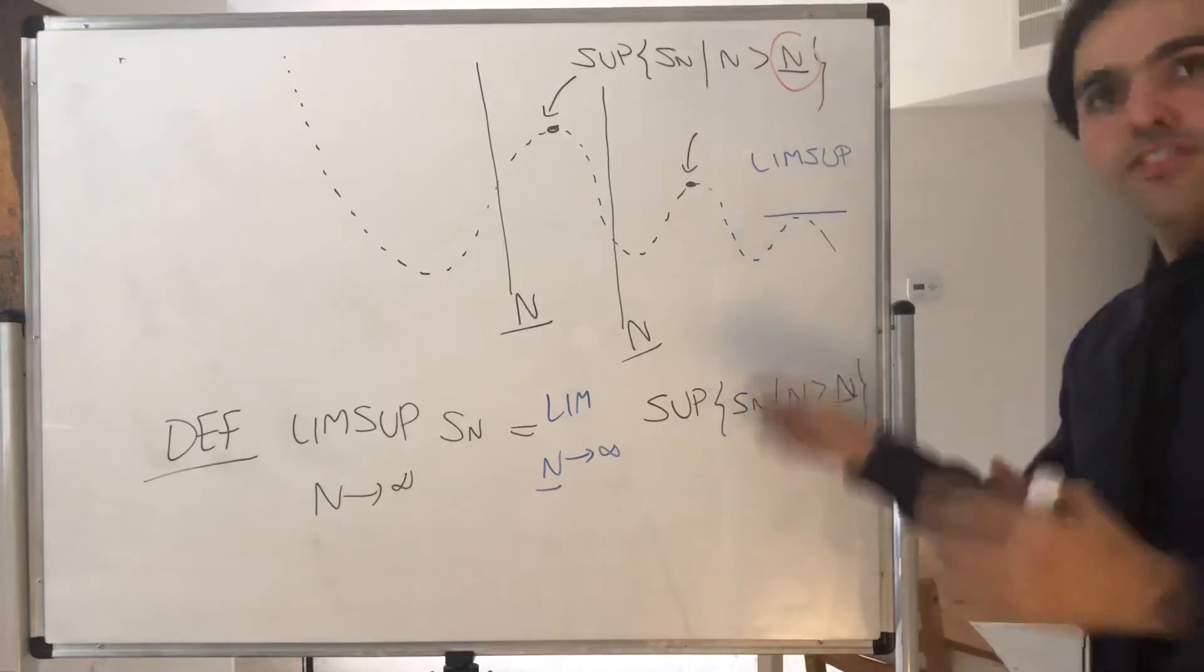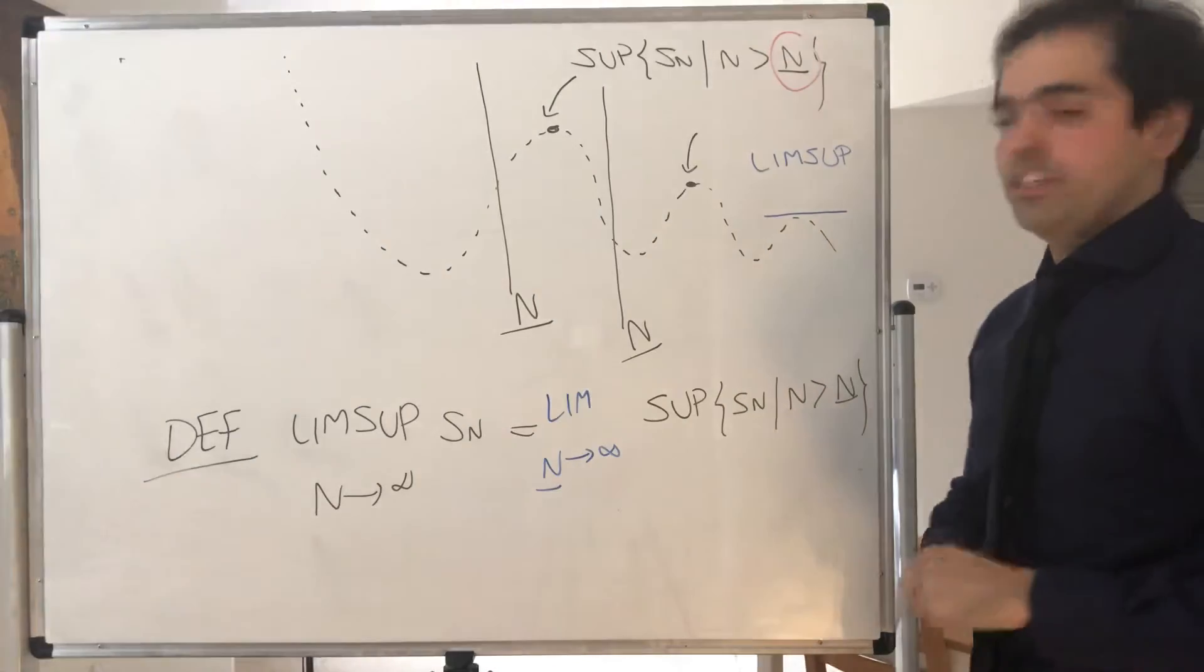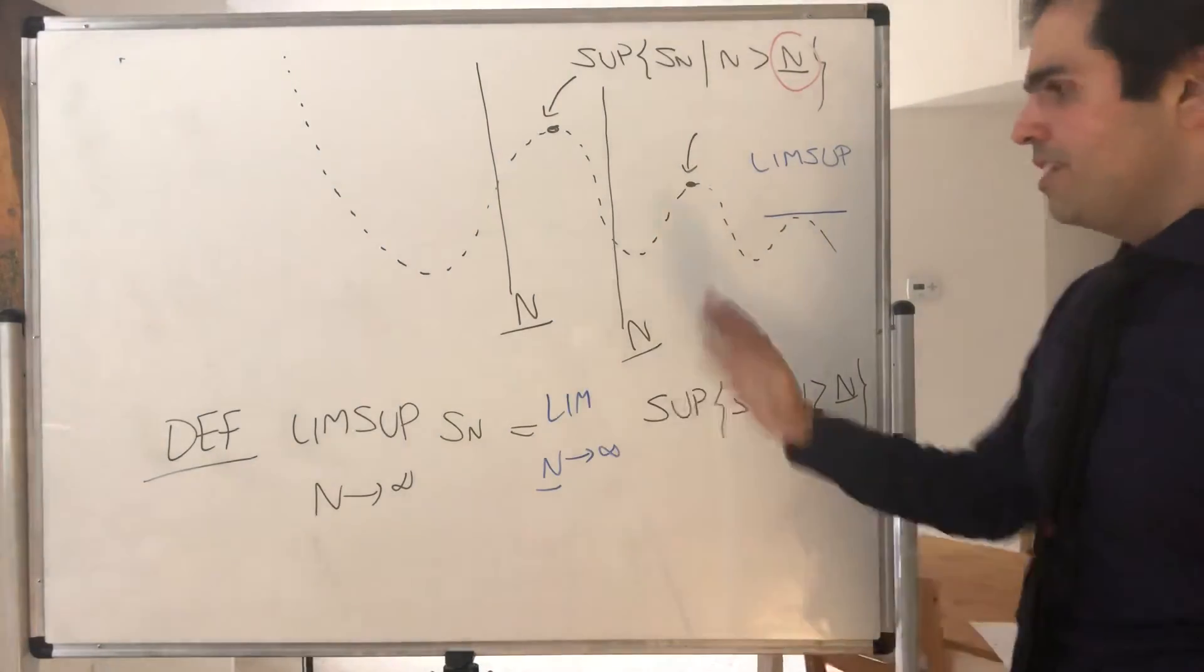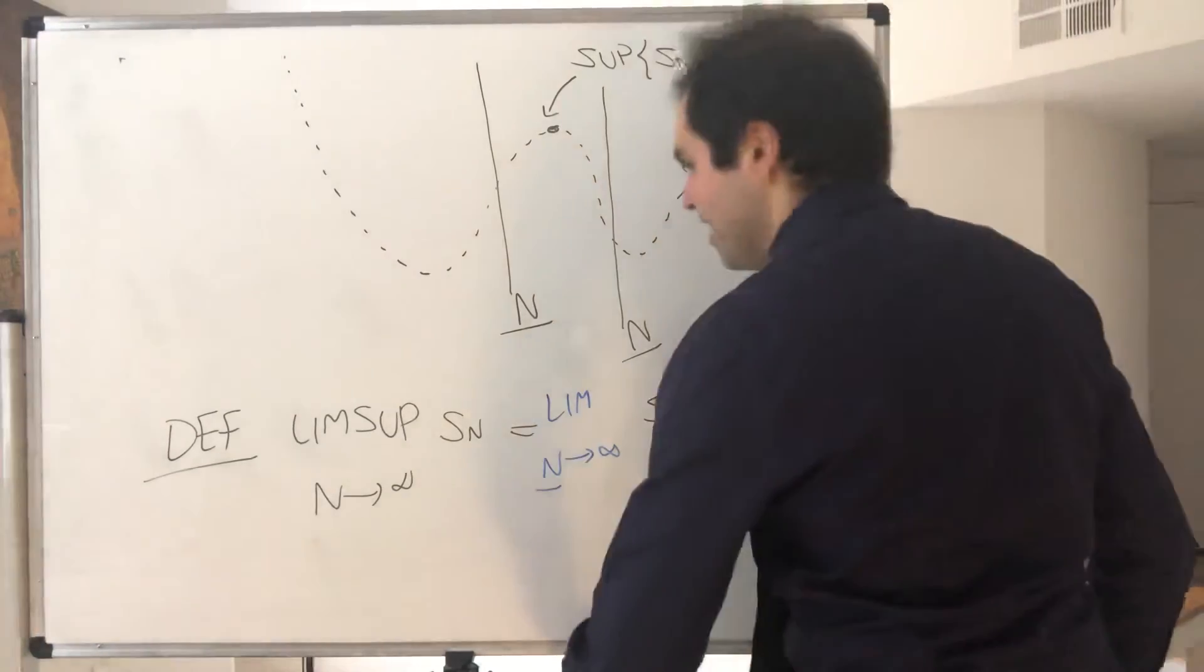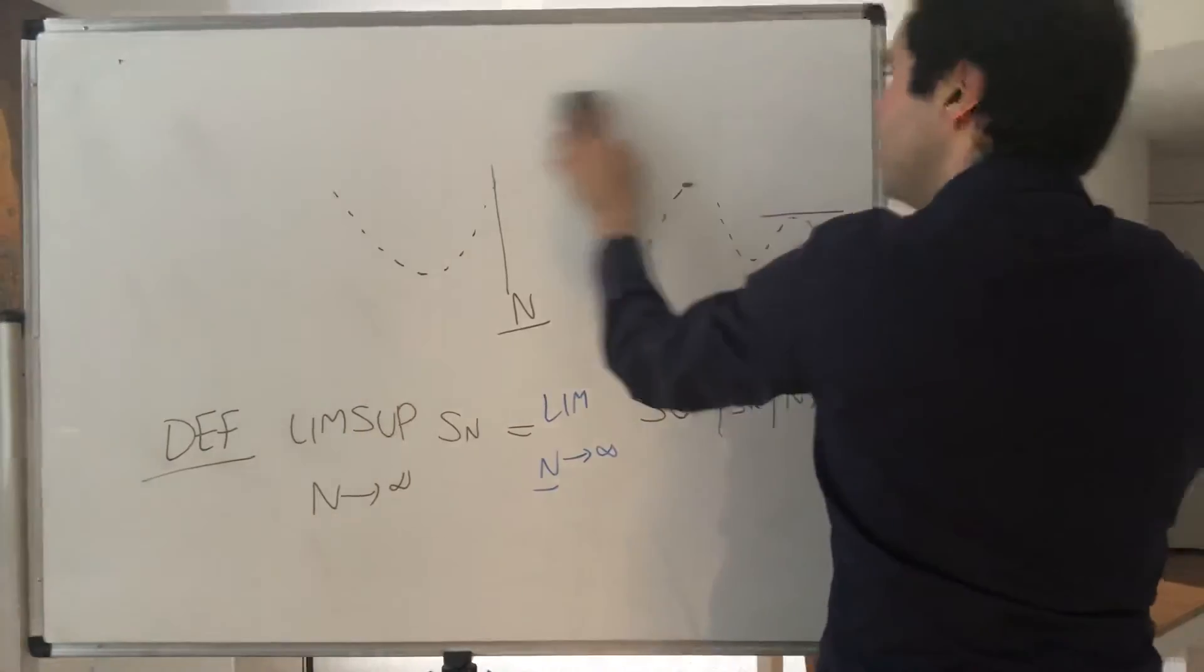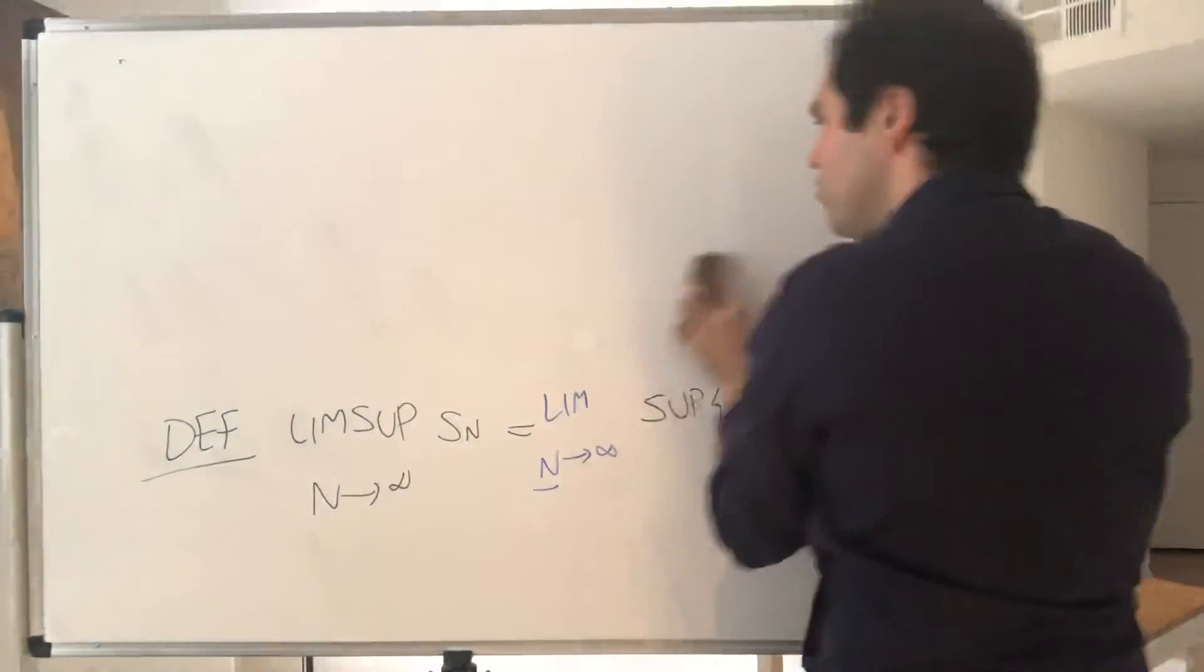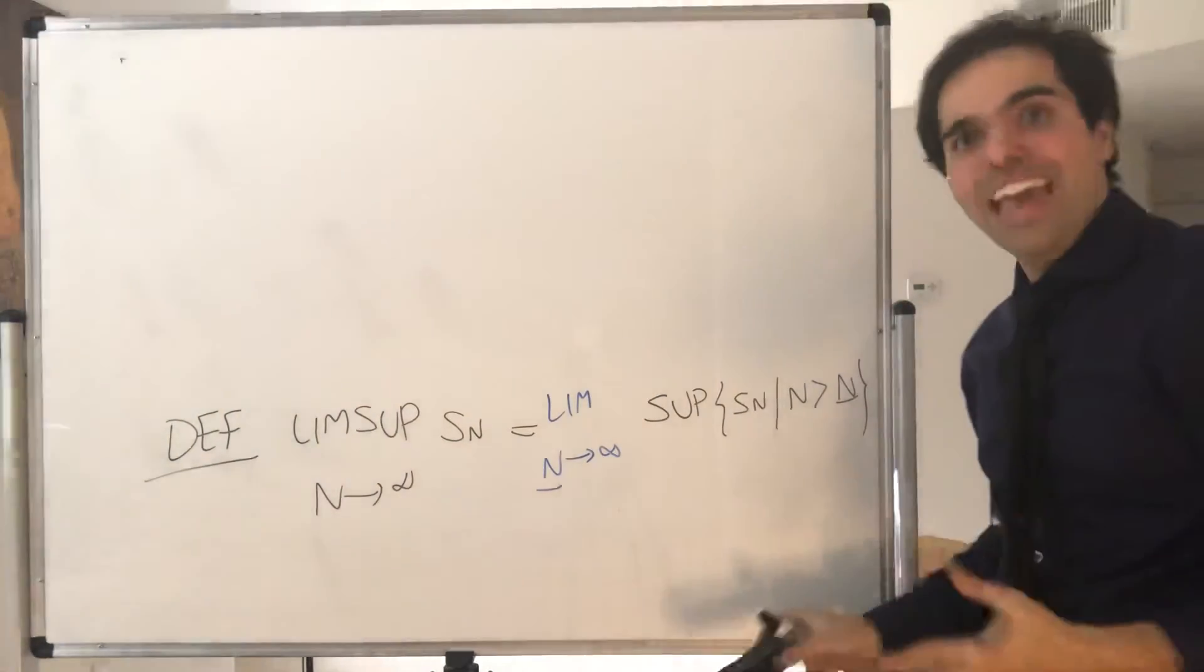And similarly with liminf, where we take the infimum instead of the supremum. And the point is the limsup always exists, which is great. Now that said, in my opinion, it's still an abstract concept and it would be nice if we can somehow attain it.